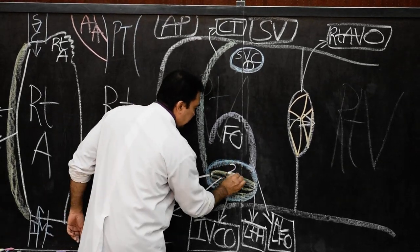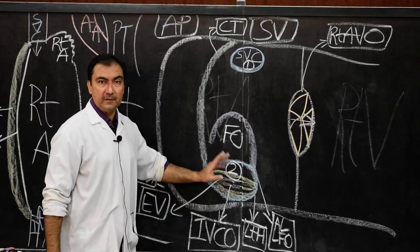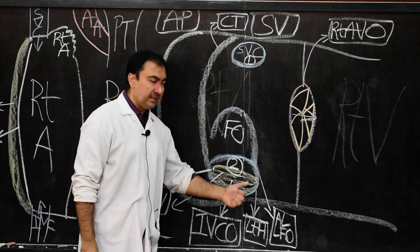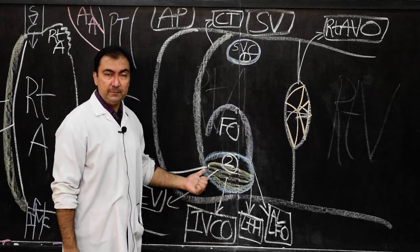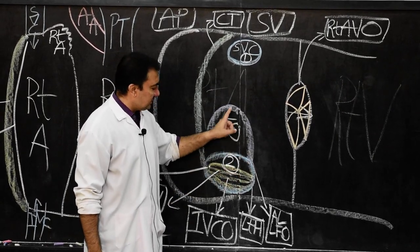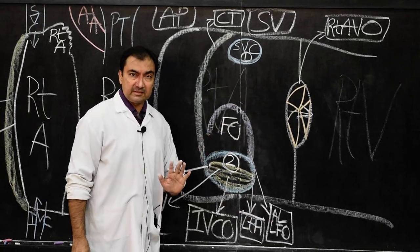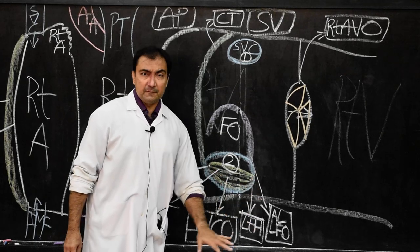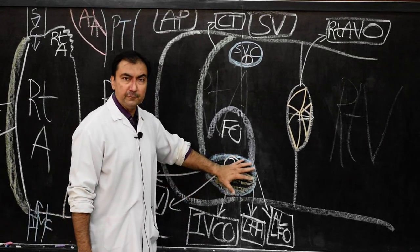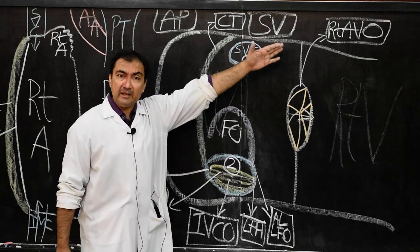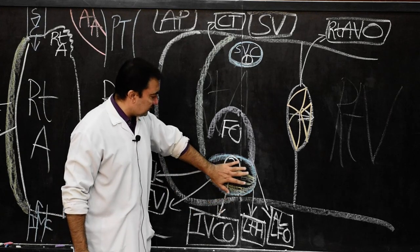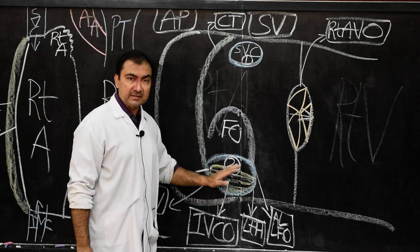This is structure number two: the eustachian valve guarding the orifice of inferior vena cava. Its right horn is continuous with the inferior margin of crista terminalis, and its left horn is continuous with the anterior limb of limbus fossa ovalis. In the fetal stage, the eustachian valve is very active, regulating the flow of blood from the inferior vena cava to the left atrium through the foramen ovale.